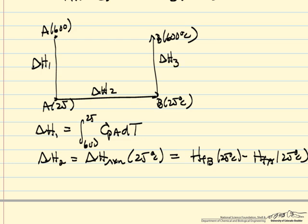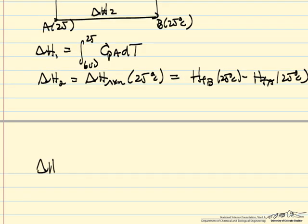And then we're going to want to take the product B and heat it up to 600 degrees C and calculate delta H3. So delta H3 is the integral from 25 to 600, the heat capacity of B, integrated over T.